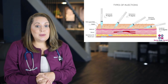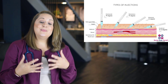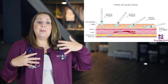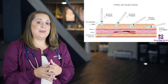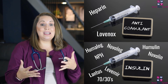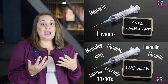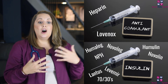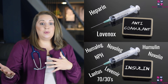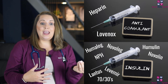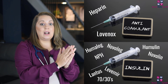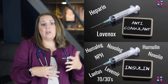The most common medications you'll see with subcutaneous injections include anticoagulants such as heparin or Lovenox, and insulin — which includes rapid-acting insulins like Humalog and Novolog, short-acting like Humulin and Novolin, intermediate-acting like NPH, and long-acting insulins like Lantus and Levemir. You also have pre-mixed combos of long and short acting, like the 70-30s of Humulin, Novolin, and Novolog.